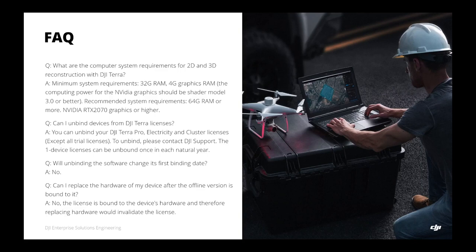Third question: will unbinding the software change its first binding date? The answer is no. Fourth question: can I replace the hardware of my device after the offline version is bound to it? The answer is no — if the hardware is changed, the license will become invalid. When that happens, you will need to contact DJI support to unbind the license and then rebind it after the hardware change.